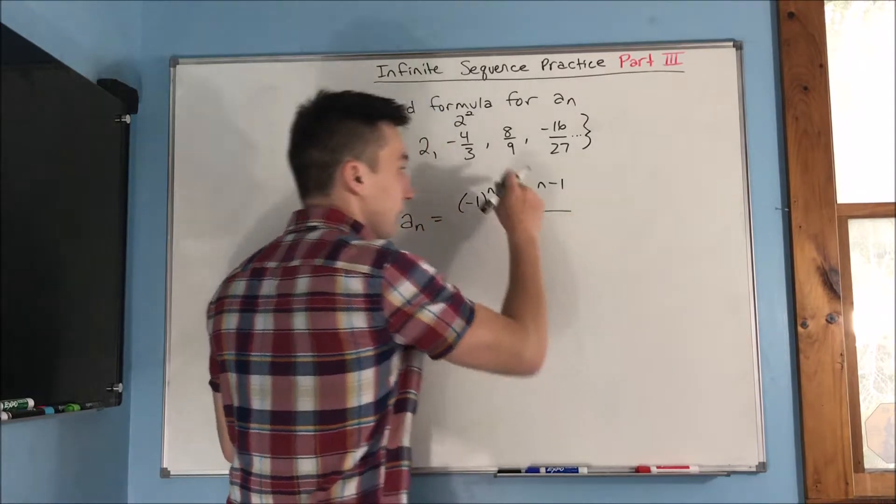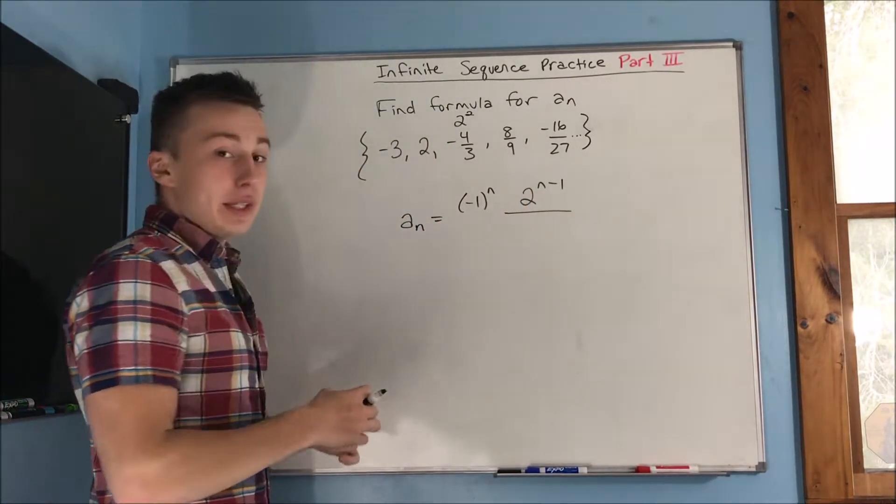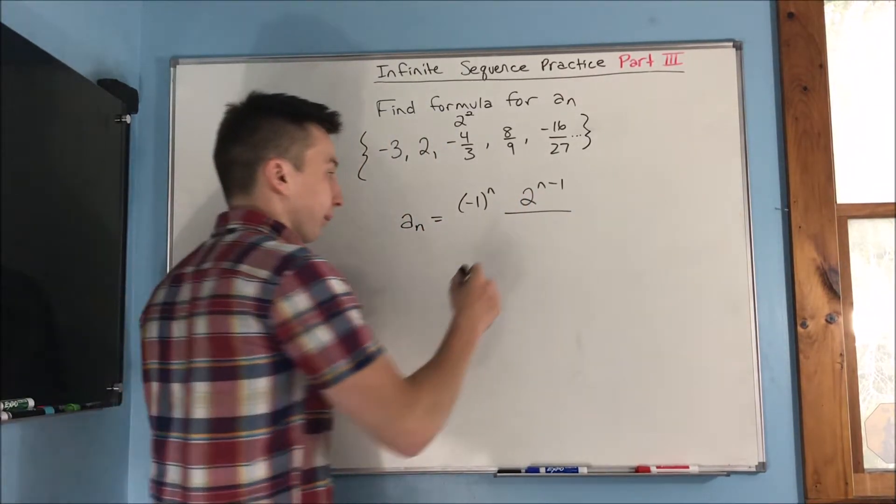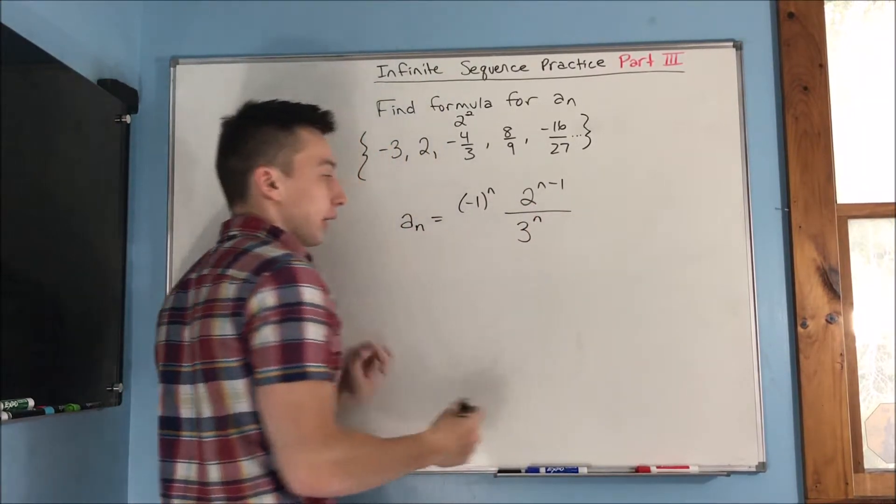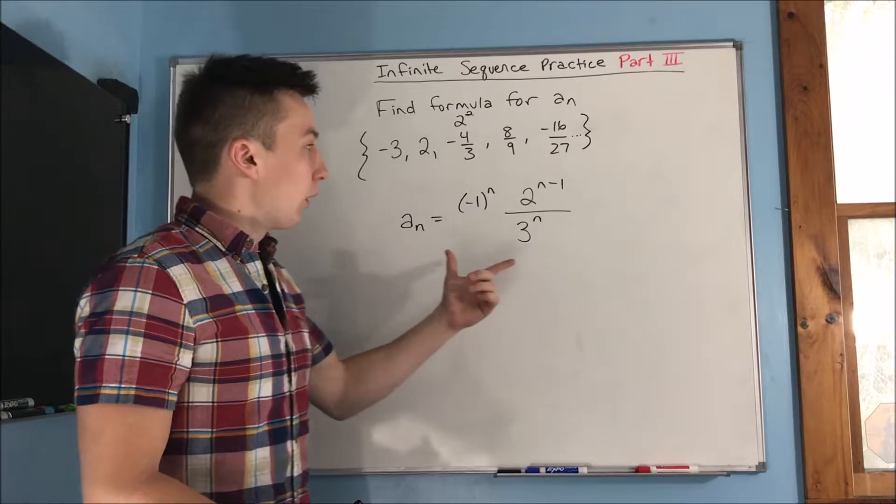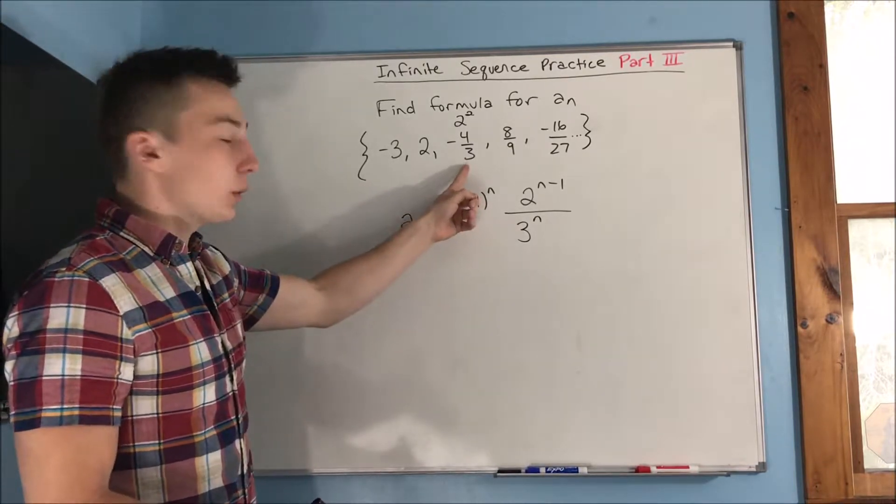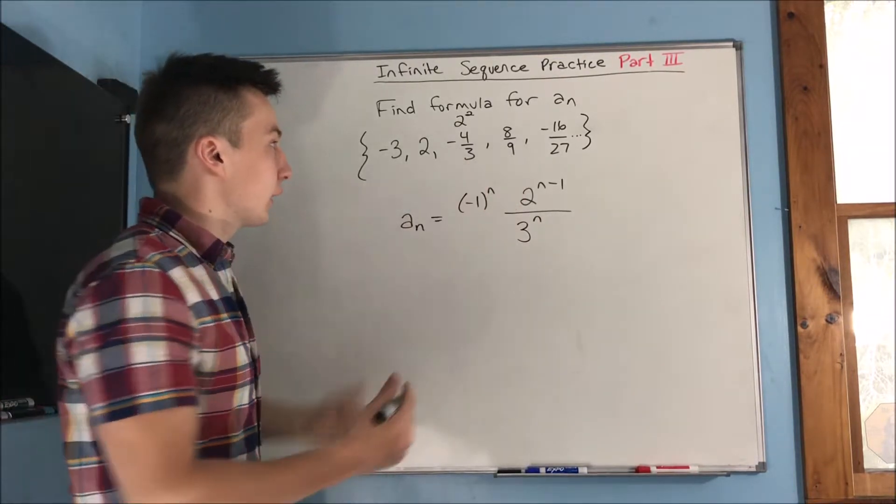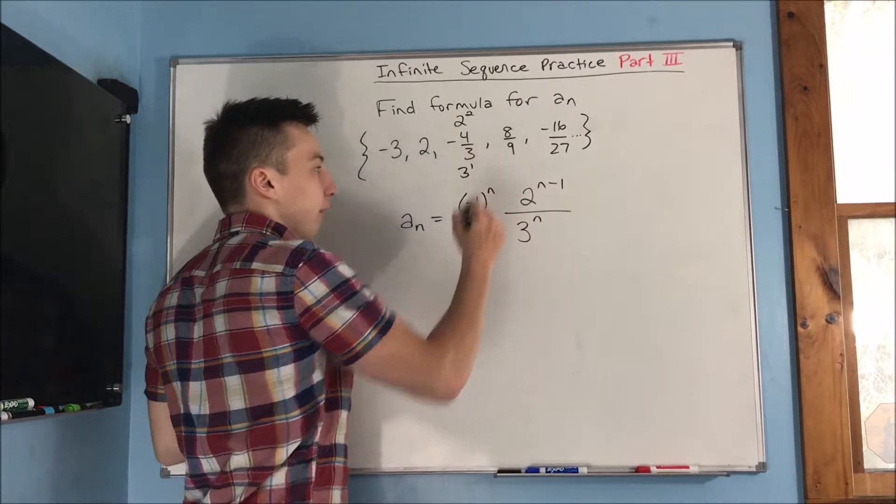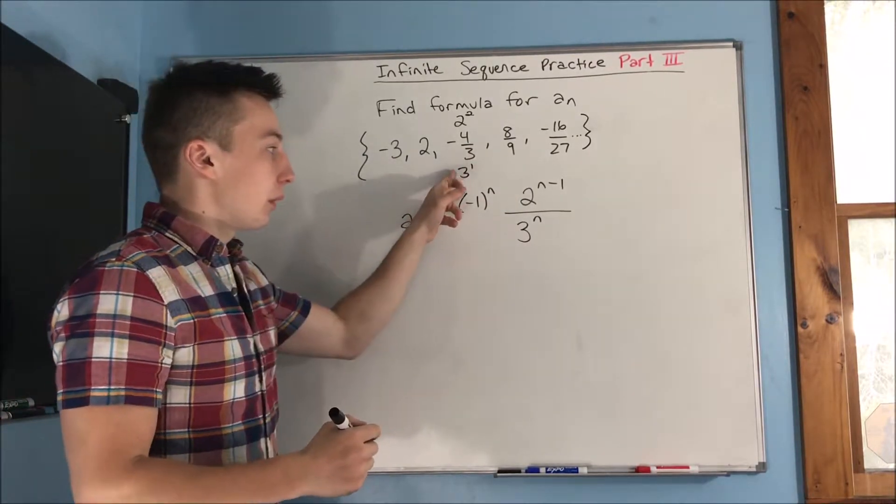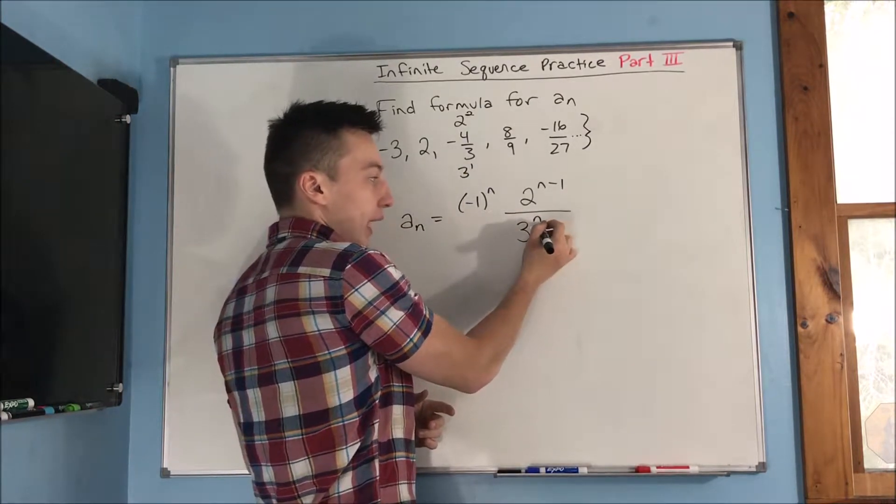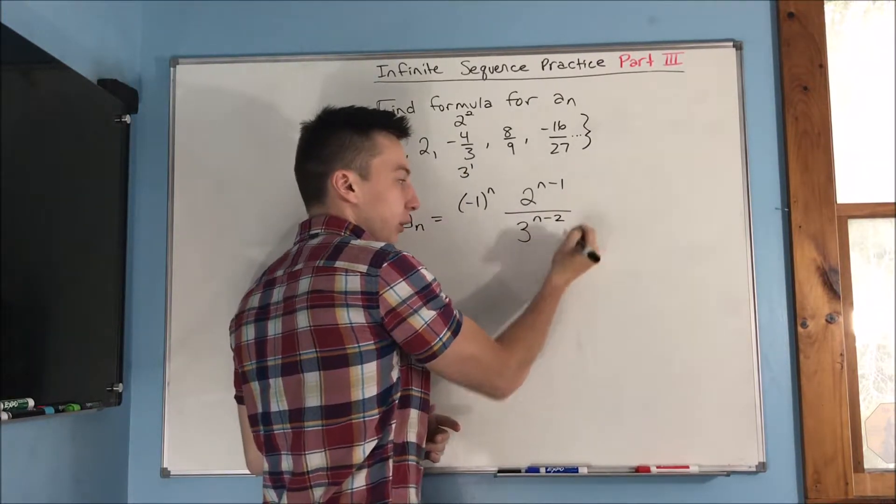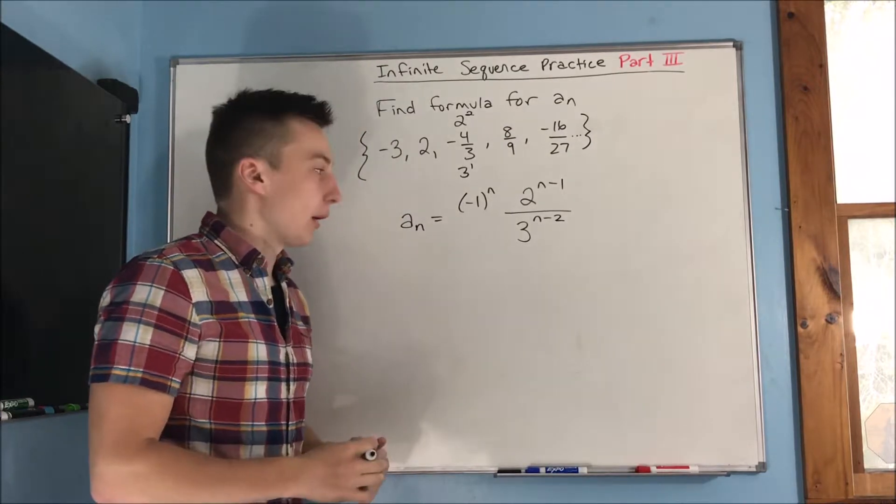Now we also have to deal with the denominator, which is three to powers. So three to the n, and there's another something that happens here. Well, this is three to the first, this is three to the second. So for this term, we have three to the first, and this is the third term. So that means that to get to the first, well, this n is going to be three, so we'd have to subtract two.